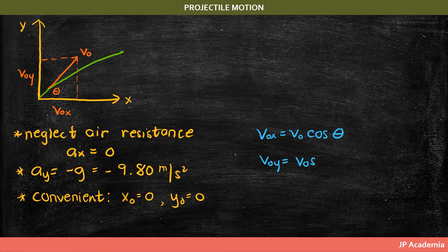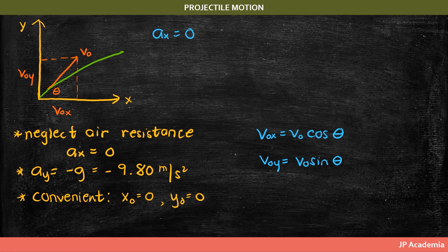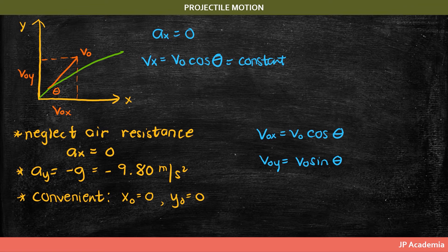Let's start with the expression for the initial velocity. Along x, we have v0x, and along the y direction, we have v0y. Using simple trigonometry, we have the corresponding expressions. Then using our constant acceleration formulas for two dimensions, we can derive the following important expressions for projectile motion. For the x-direction, given a sub x equals zero, the velocity along x equals v0 cosine theta, and this is constant for this first-approximation projectile motion. For the horizontal position, we have the corresponding expression.